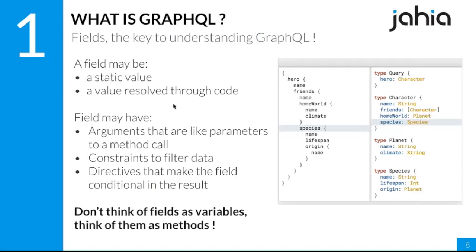Fields are really the key to understanding GraphQL. A field can be either a static value — the simpler case — or a value that results from code execution. I think this is the most important part.